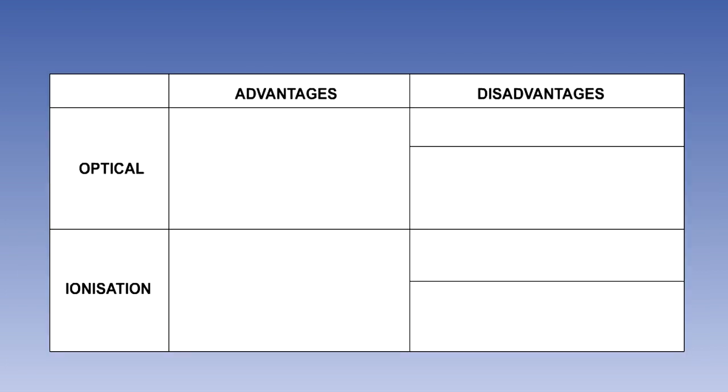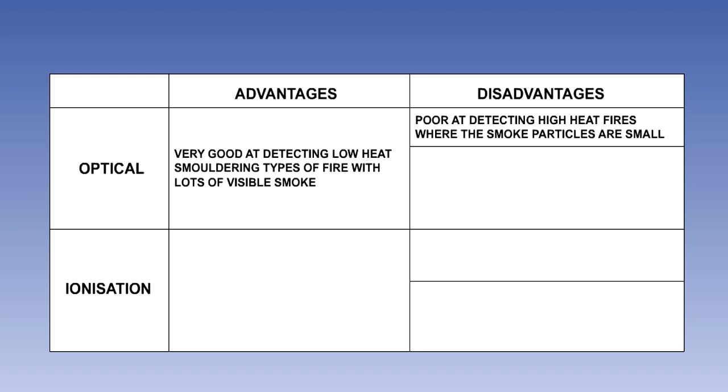The two types of detector, optical and ionization, both have advantages and disadvantages. The optical detector is very good at detecting low heat, smoldering types of fire with lots of visible smoke. However, it is not very efficient at detecting high heat fires, where the smoke particles are much smaller.